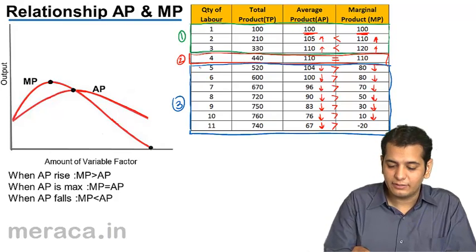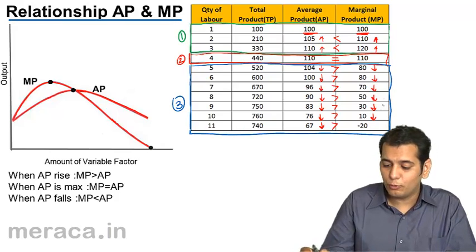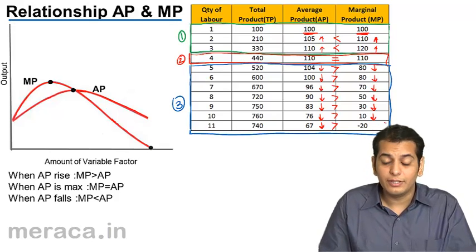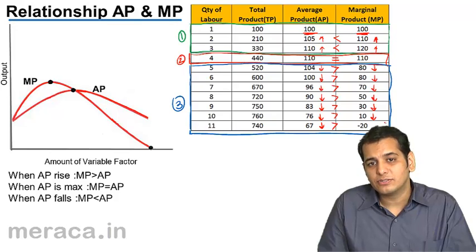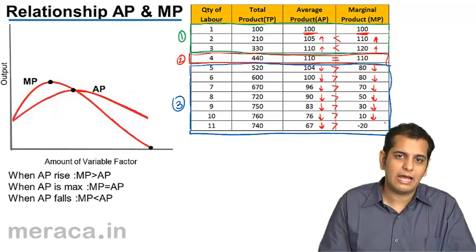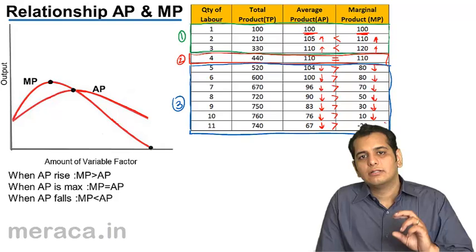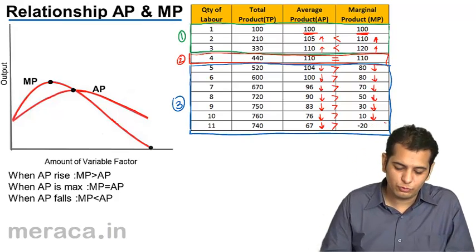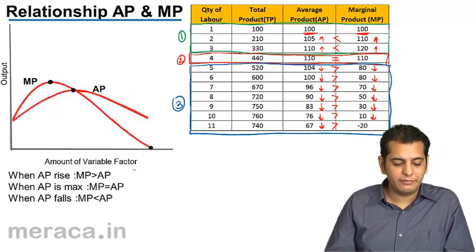And finally, in the third stage, where both are falling, MP and AP both are falling. Here, you can see that AP is greater than MP. Average product is higher than marginal product. So we can say that they are related in three ways.